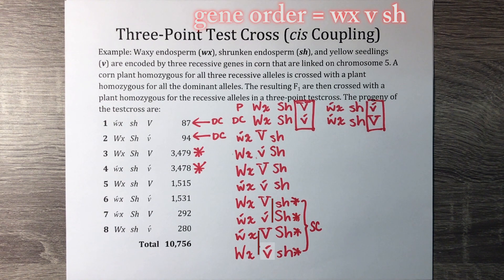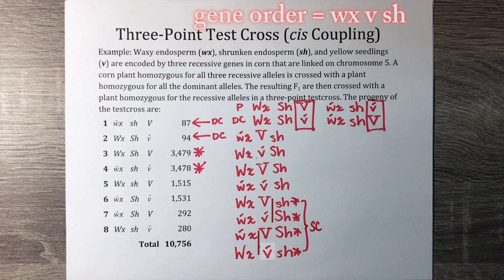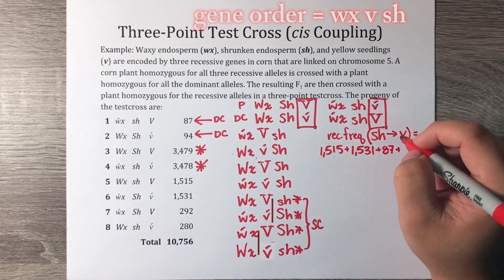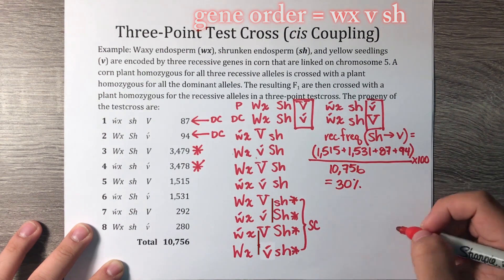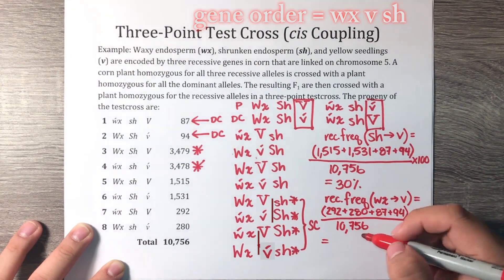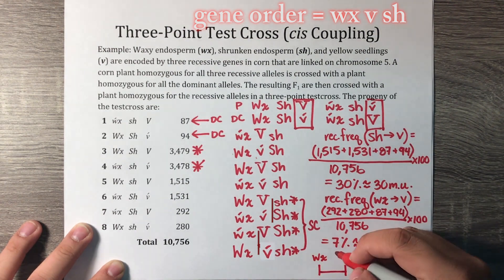We have now determined our gene order: WX, V, SH — or equivalently SH, V, WX — because a gene order can be read in either direction. Now we need to calculate the map distances between the genes based on the frequencies of recombination in the progeny. We must include all crossovers, both double and single, that take place between two genes. There are a total of 10,756 progeny. The recombination frequency between SH and V is the sum of progeny with single crossovers at SH-V and double crossover progeny, divided by the total, multiplied by 100. Similarly for WX and V. The map distance between SH and V is 30 MU, and the map distance between WX and V is 7 MU.